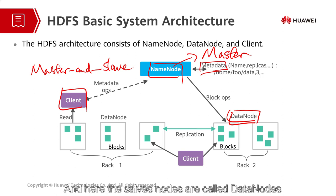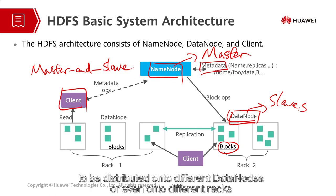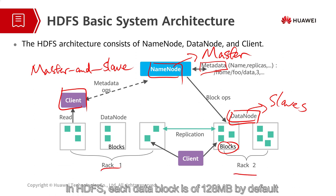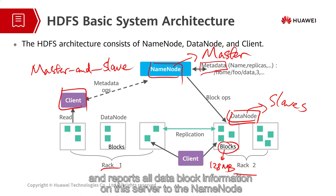The slave nodes are called data nodes. The data node stores the actual file, and each file is split into several data blocks to be distributed onto different data nodes, or even onto different racks. In HDFS, each data block is 128 MB by default. Generally speaking, each data node only manages the data blocks allocated to its local server, and reports all data block information on this server to the name node.